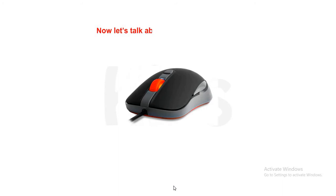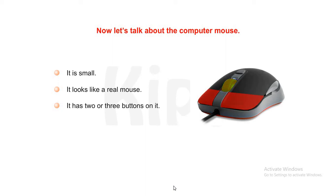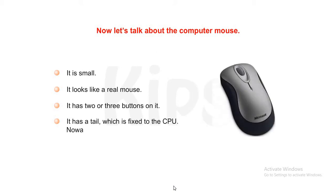Now let's talk about the computer mouse. It is small. It looks like a real mouse. It has two or three buttons on it. It has a tail which is fixed to the CPU. Nowadays we also have wireless mouse.